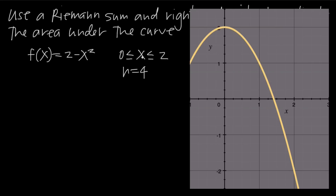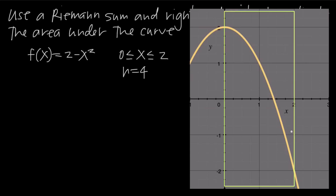We're interested in the interval x equals 0 to x equals 2. Drawing boundary lines, x equals 0 is along the y-axis and x equals 2 is at this point on the right. We're interested in the area under the curve inside this box. We've also been told we're dividing the interval into four subintervals because n equals 4.